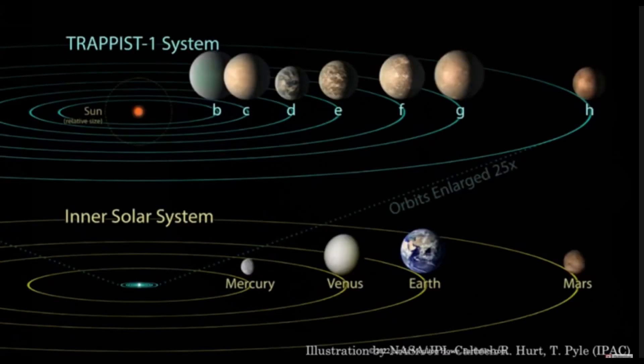Interestingly, some astronomers say that around 11 billion planets may be orbiting sun-like stars, while others believe this number is more like 100 billion.